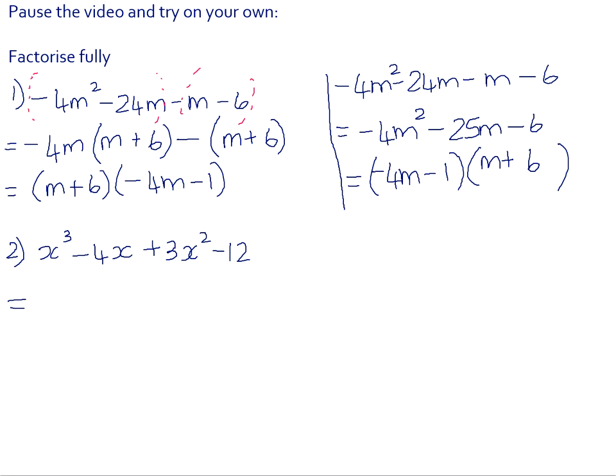In number two, there are no like terms here and there are no common factors. So the only way that we can do this one is if we group. We take out a common factor of X from the first two terms. That leaves us with X squared minus 4. We can then take out a common factor of 3 from the second two terms, which leaves us with X squared minus 4.